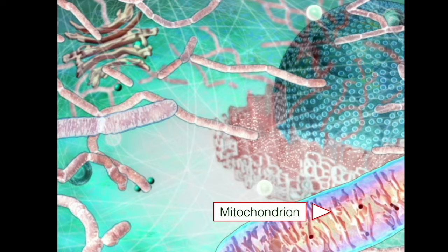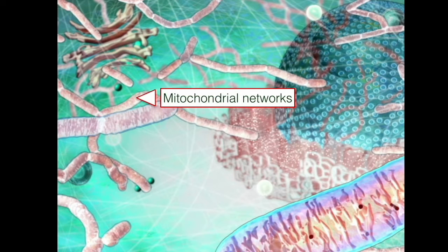Here's the mitochondrion, the powerhouse of the cell, where most of the ATP in the cell is made. There are thousands of mitochondria in each cell, forming highly dynamic networks.